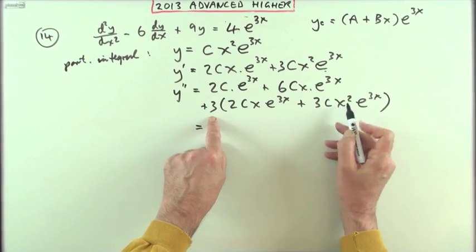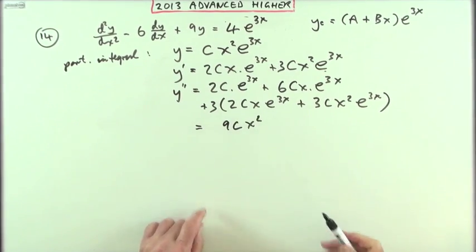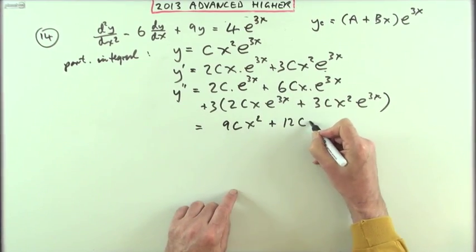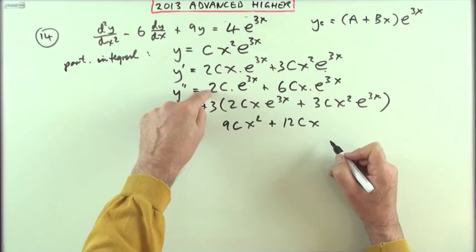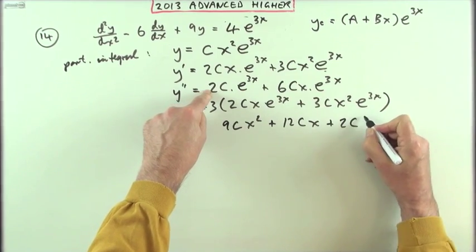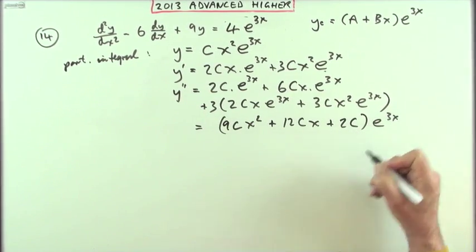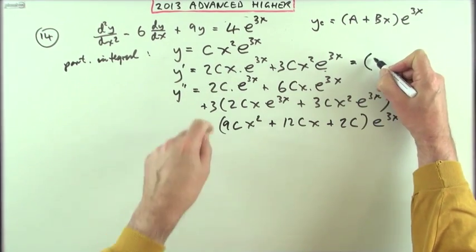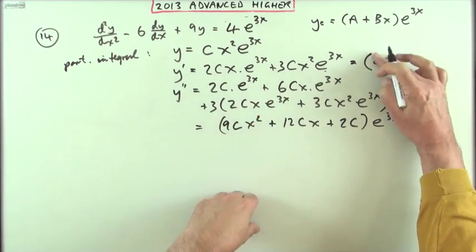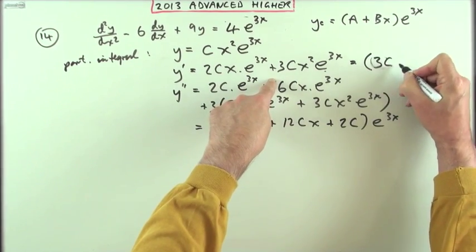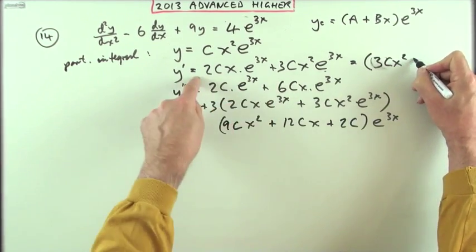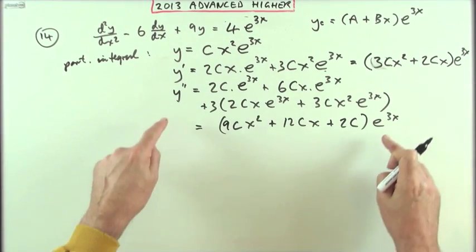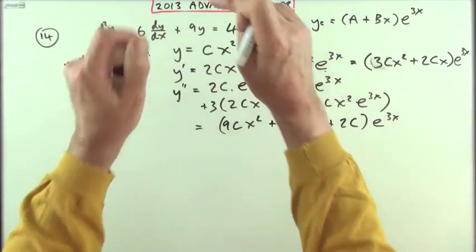I've got 9Cx², 6Cx and 6Cx is 12Cx, and just 2C lots of e^(3x). I'll pop this part out as well: that's (3Cx² + 2Cx)e^(3x). Now I have to feed these three parts into this and equate it to the required result.